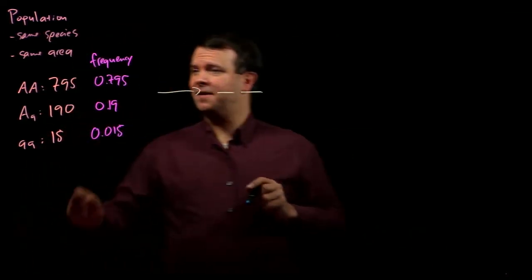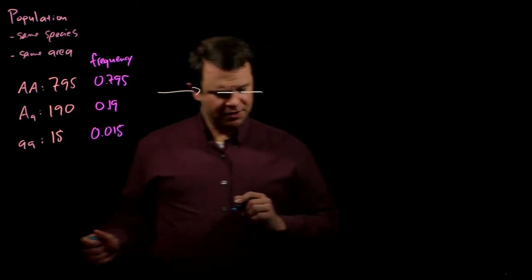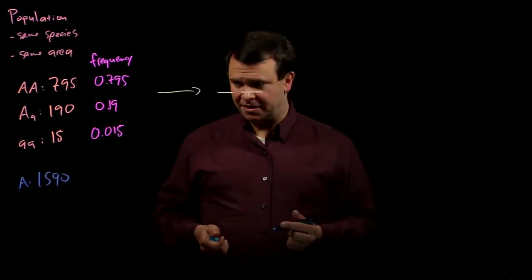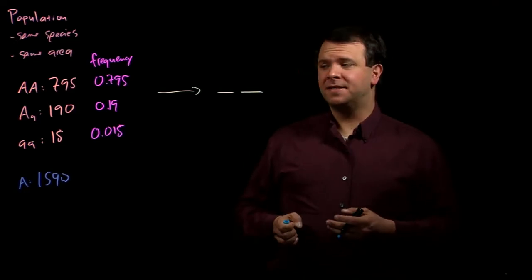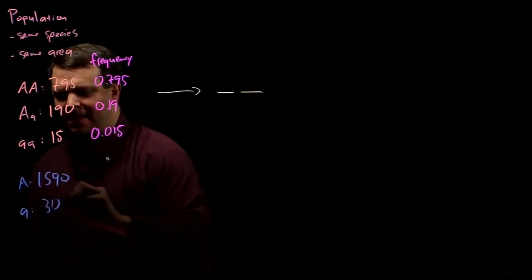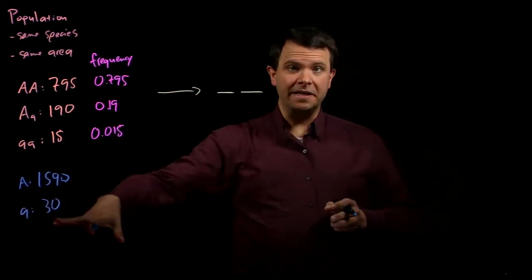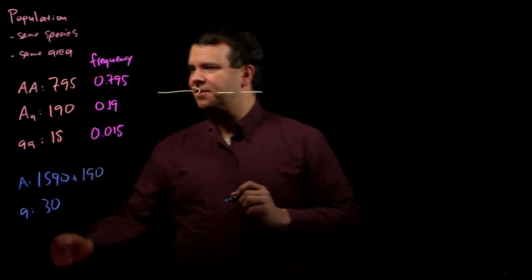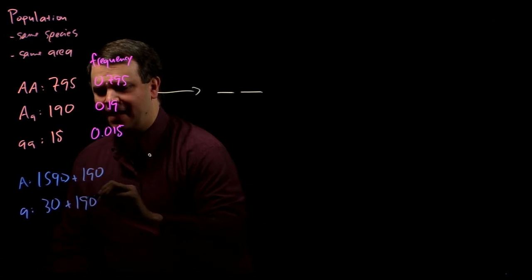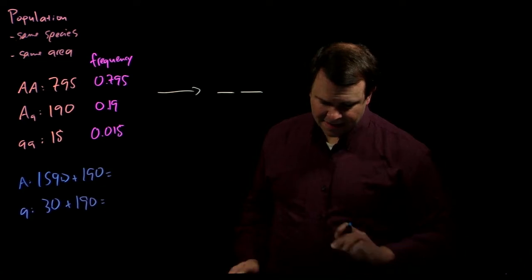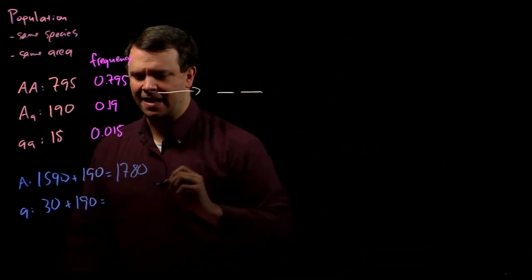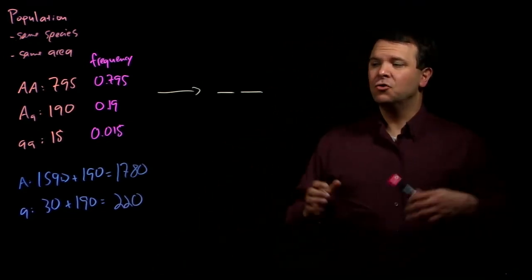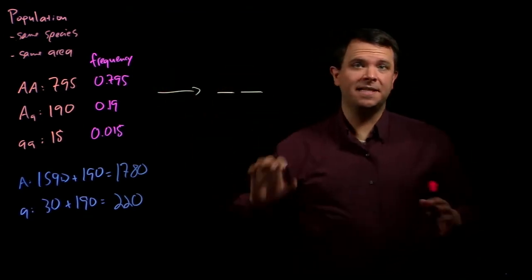Because there are 795 homozygous big A individuals, that means they will contribute 1,590 big A alleles. Similarly, there are 15 homozygous little a individuals, which means they contribute 30 little a alleles to the allele distribution. And then of course we've got the heterozygotes — they contribute 190 alleles of big A and 190 alleles of little a. So we end up with a total of 1,780 big A alleles and 220 little a alleles. We'll go ahead and recast this from a count to a frequency distribution as well.